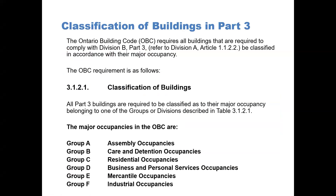The Ontario Building Code requires all buildings that are required to comply with Division B Part 3, referred to in Division A Article 1.1.2.2, to be classified in accordance with their major occupancy. The OBC requirement is found in Article 3.1.2.1, Classification of Buildings.